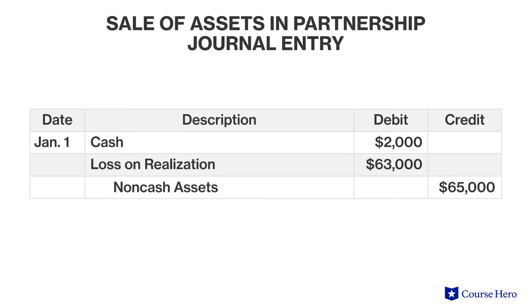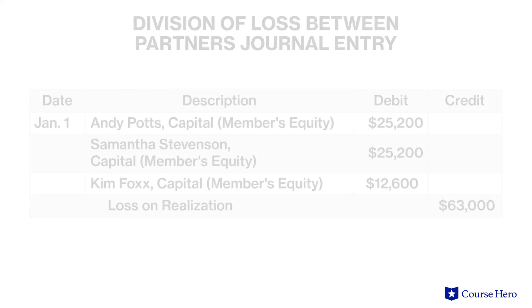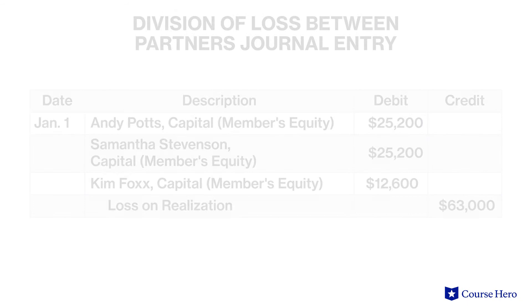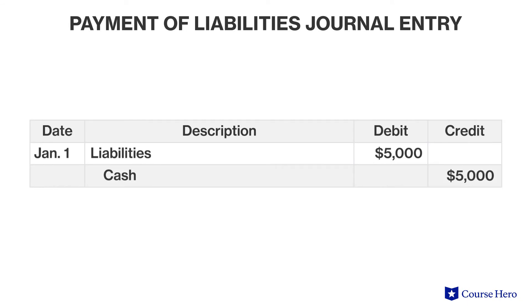The first journal entry in this scenario involves the receipt of two thousand dollars of cash in exchange for assets with a book value of sixty-five thousand dollars, triggering a loss of sixty-three thousand dollars. The second entry involves the apportionment of the loss among the partners according to their distributive share. The third entry involves the payment of outstanding liabilities.